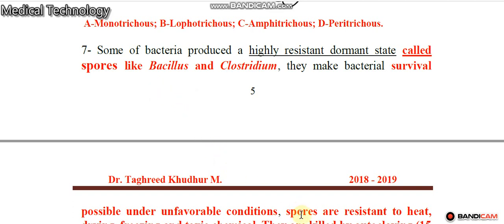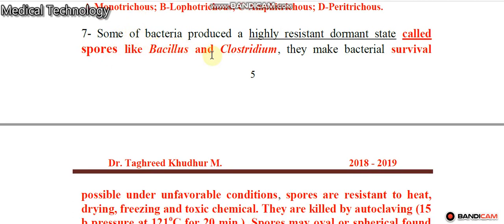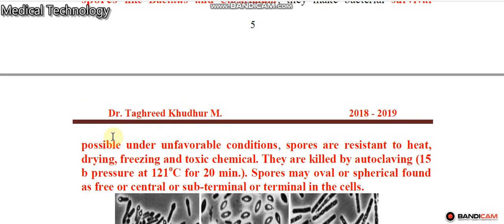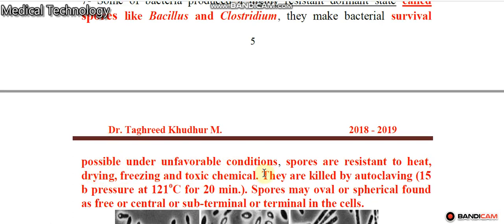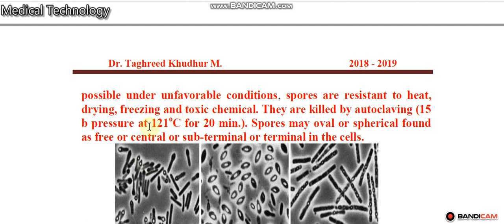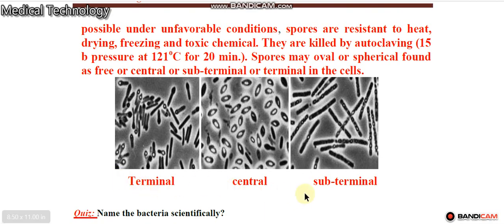Another structure of bacteria is the cold spore. Some bacteria produce a highly resistant dormant state called spores, such as Bacillus and Clostridium. They make bacterial survival possible under unfavorable conditions. Spores confer resistance to heat, drying, freezing, and toxic chemicals, but are killed by autoclaving under standard sterilization conditions.